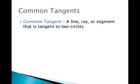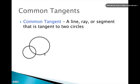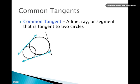Common tangents are a line, ray, or segment that is tangent to two circles. Here we've got circles with two intersections, and if we draw tangent lines, we can see two lines that are tangent to both circles. Any other lines we draw wouldn't be common to both of them — a common tangent must be tangent to both circles.